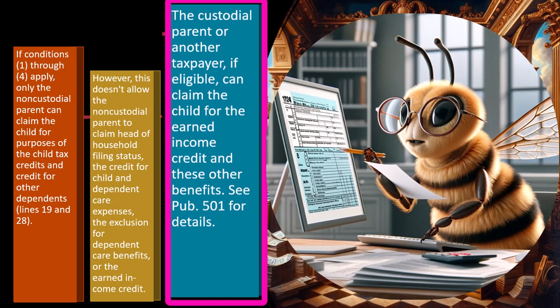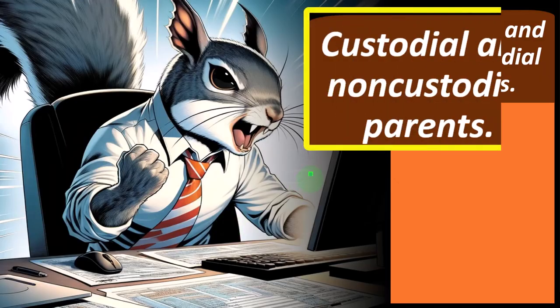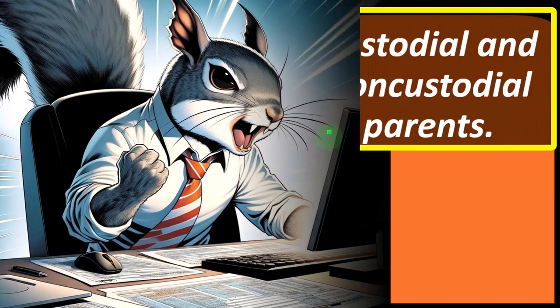The custodial parent, or another taxpayer if eligible, can claim the child for the earned income credit. Even if they don't have much income, that could be a significant benefit — they won't be paying tax but could participate in welfare-type benefit programs. If this is your situation, see Publication 501 for details on custodial and non-custodial parents.